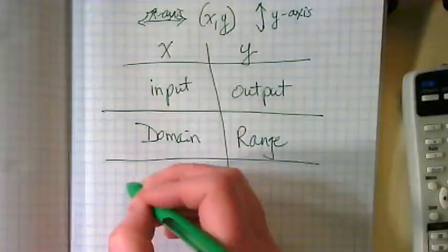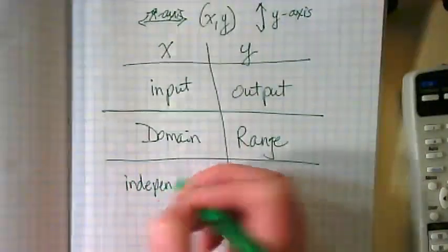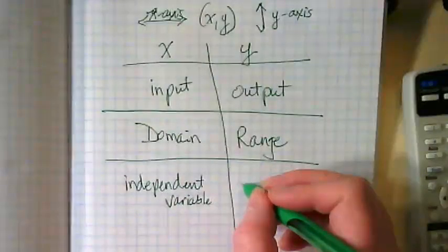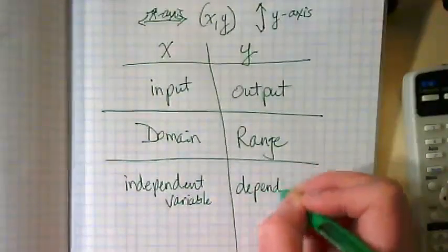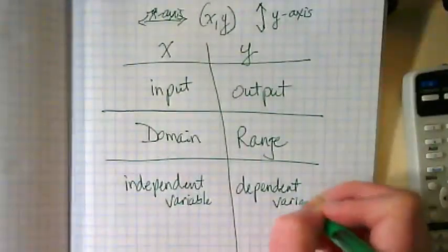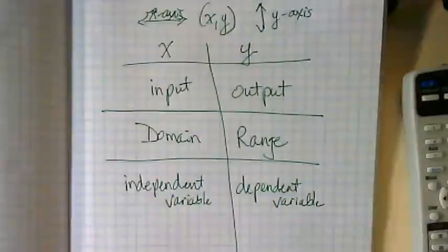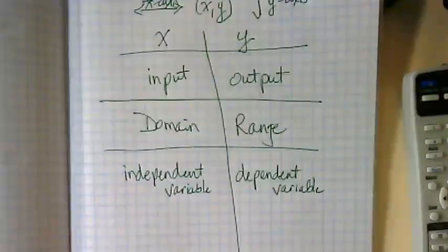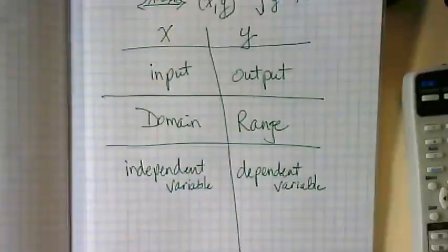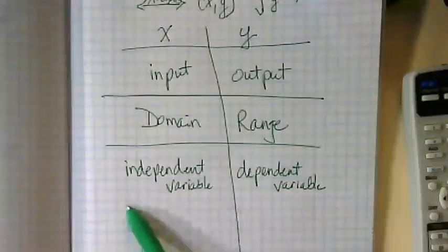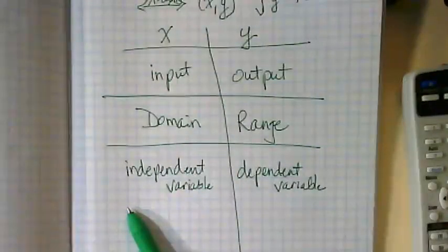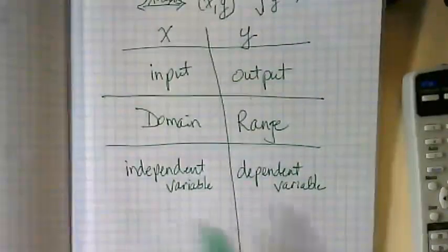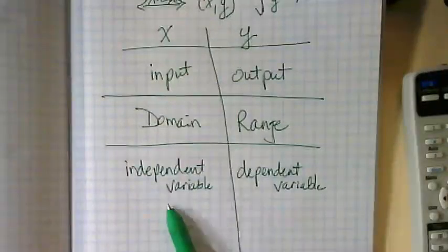This one does make sense to me, though. This is the independent variable. I want you to think about some things that we've graphed. If we're graphing a cost of anything, whatever the total cost is depends on some other variable.